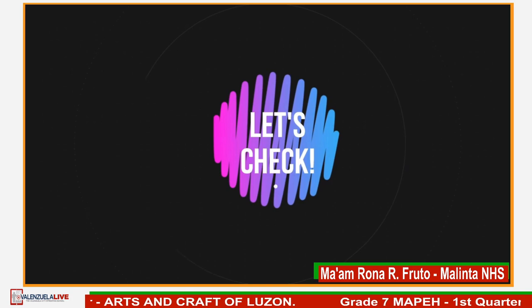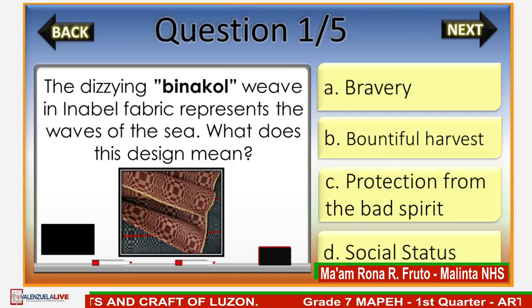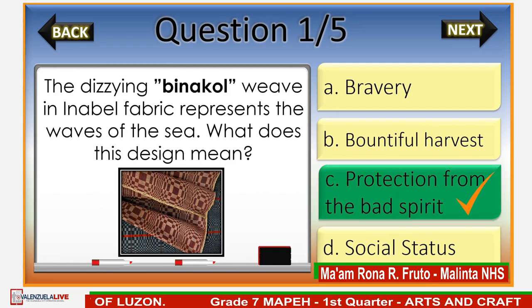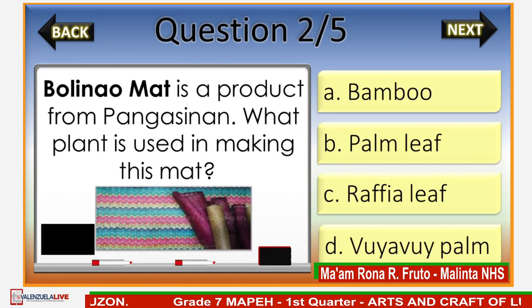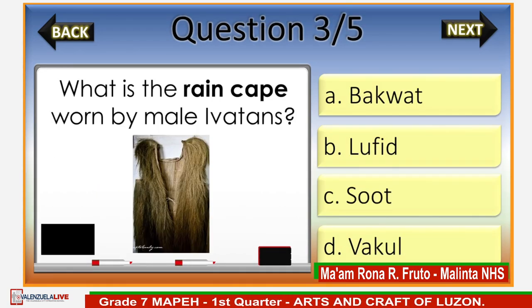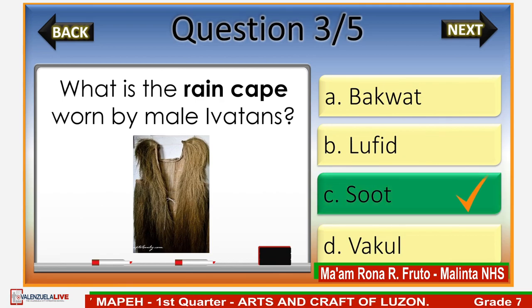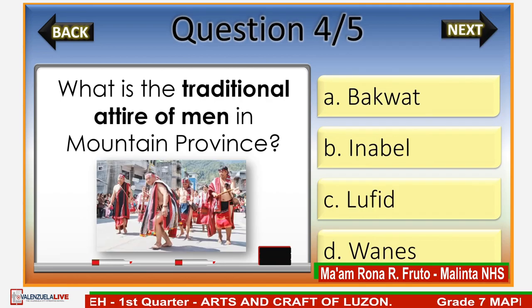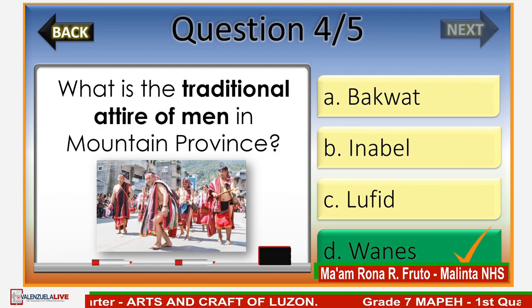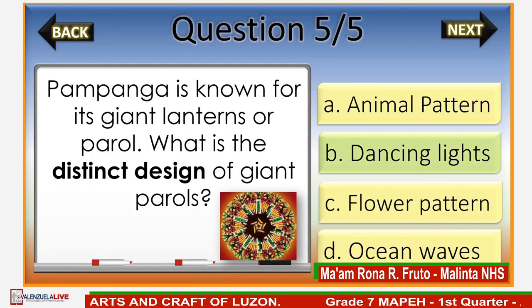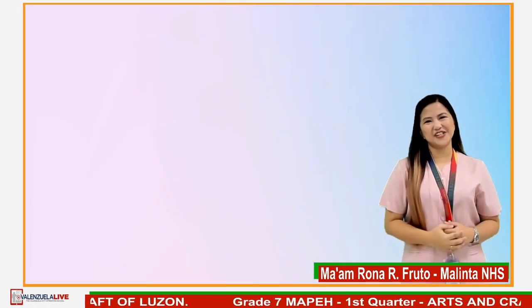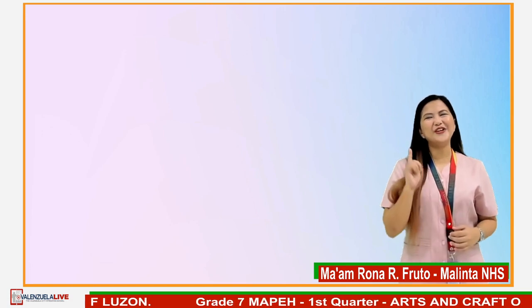Let's check your answers. Number 1: C, Protection from the bad spirit. Number 2: C, Raffia leaf. Number 3: C, Suot. Number 4: D, Wanes. Number 5: B, Dancing lights. How many correct answers did you get? You did great!